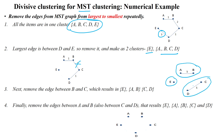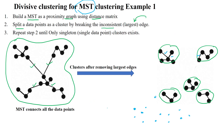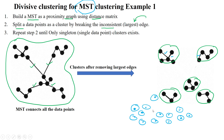Then again you remove the next largest edges, and finally you will get singleton clusters for the given data points. In this manner, all the clusters will be singleton clusters — each singleton cluster will have only a single data point. Thanks for watching.